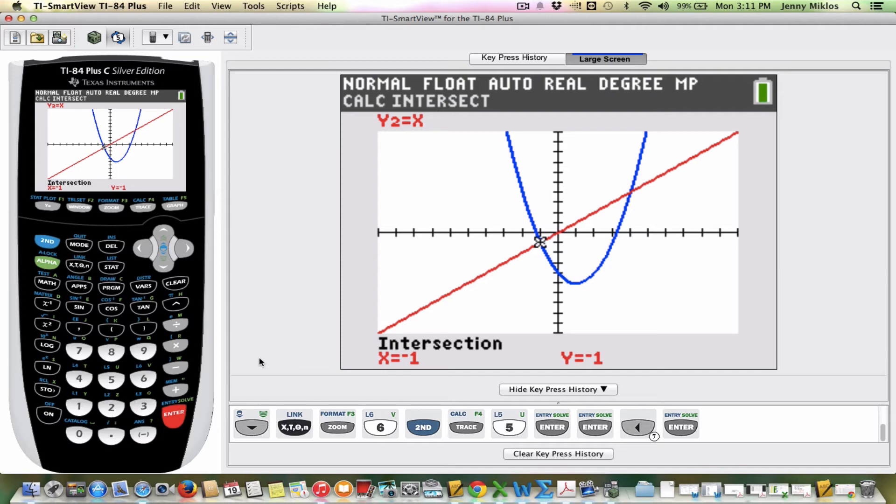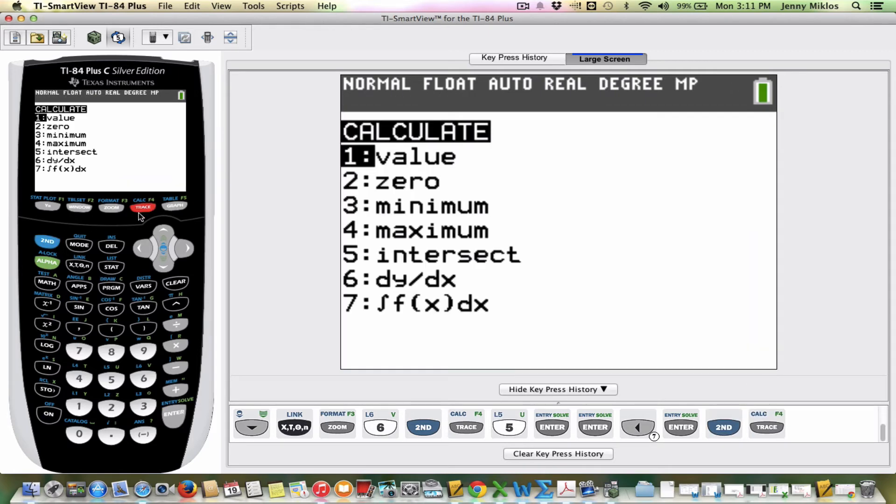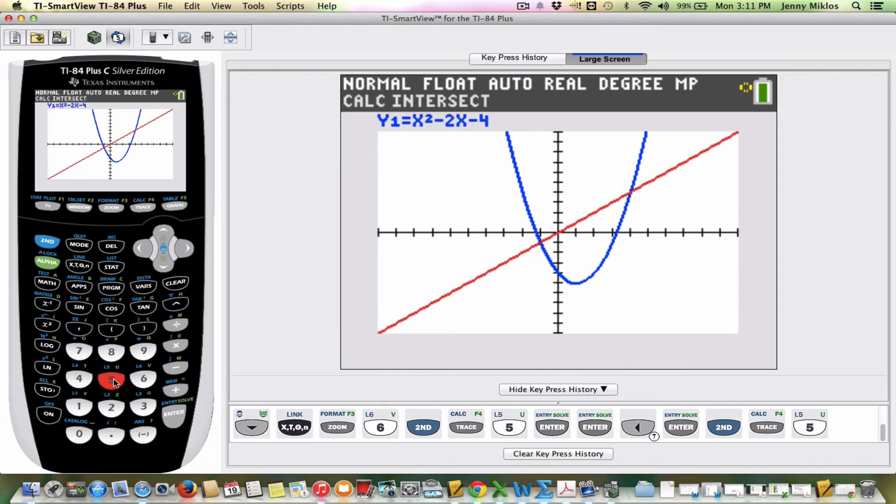Now for our second answer, I'm going to go through the process again and press second, trace, and choose intersect. Okay, I'm not even going to move. I can see it's on the first curve. And if we look up here, it tells us which equation it's on. Plus, if you have the same calculator as I do here, it's color-coded. So I'm going to press enter.